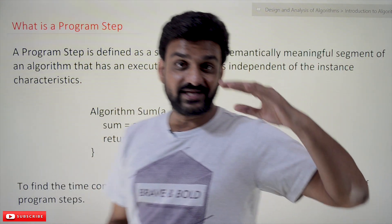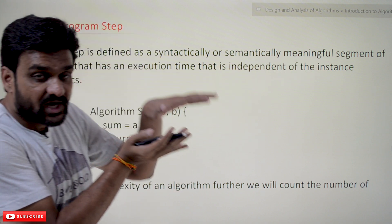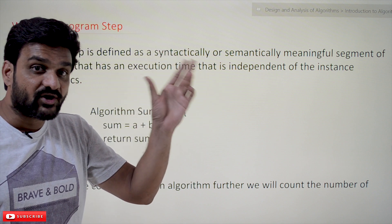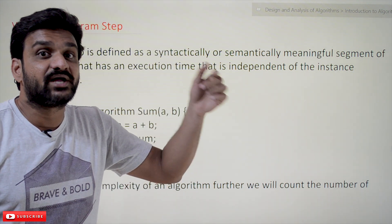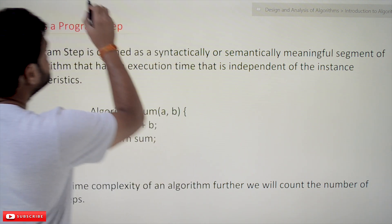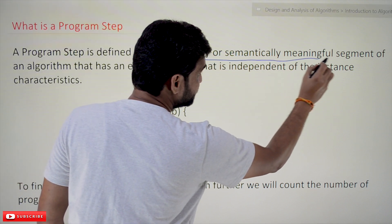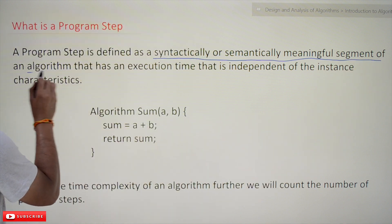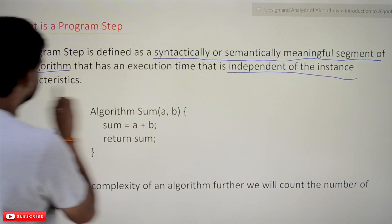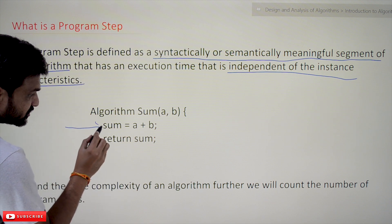If you consider any line of code or any step of the algorithm, when can we say that step is a program step? It is when that line of code is syntactically or semantically meaningful, and when it has an execution time that is independent of instance characteristics.